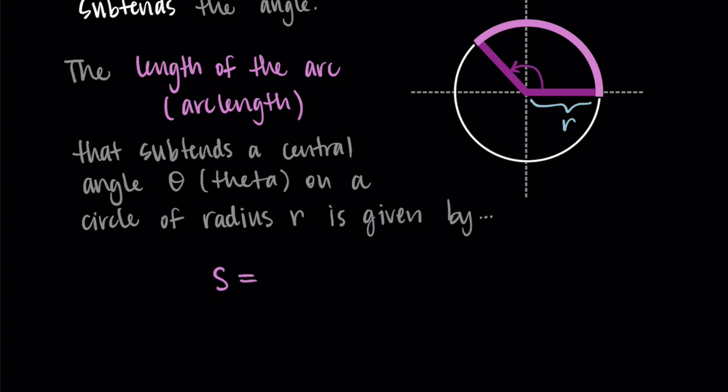So using this information, we get the formula that s, the arc length, is equal to r, the radius, times theta, the angle. And that's our formula.